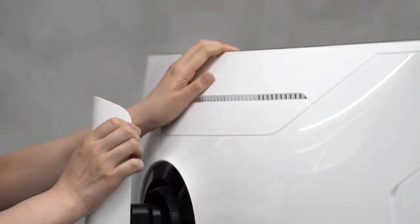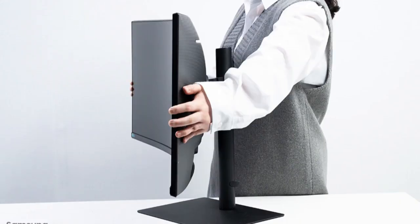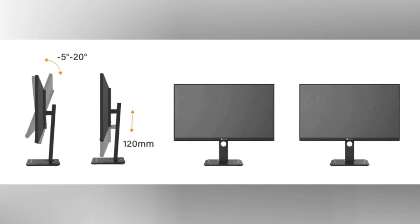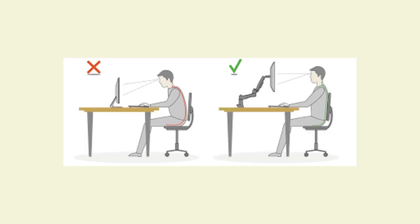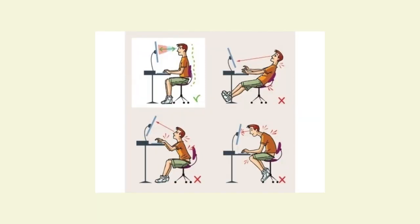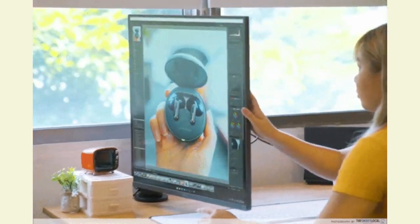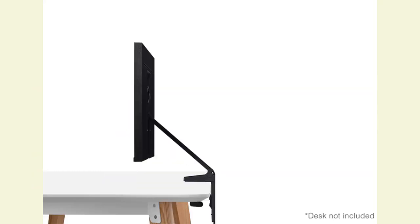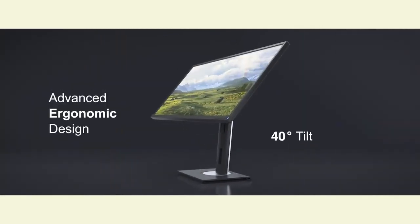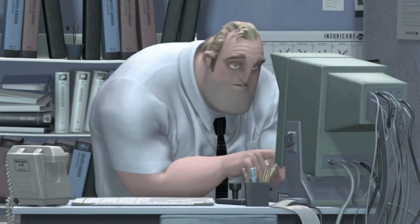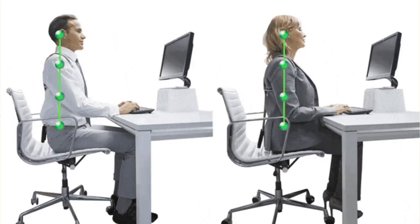Monitor ergonomics refers to the design and features of a monitor that prioritize user comfort, health, and productivity during extended usage. A well-designed ergonomic monitor can significantly improve the overall computing experience, reduce physical strain, and enhance productivity. An ergonomic monitor should have a height-adjustable stand, tilt and swivel adjustments to reduce glare, and some offer a pivot feature allowing the screen to rotate from landscape to portrait orientation — particularly useful for reading long documents or coding. By investing in an ergonomic monitor and adjusting it to fit your unique needs, you can prevent discomfort, eye strain, and musculoskeletal issues, supporting well-being and productivity during long hours of work or gaming.